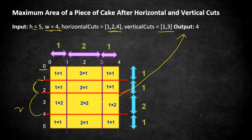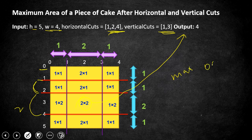If we approach it the same way, we have to find the difference between each value in the horizontal and vertical cuts, then find the area of each rectangle and track the maximum. But that is going to take O(n × m) time, where n and m are the height differences between the horizontal and vertical cuts.